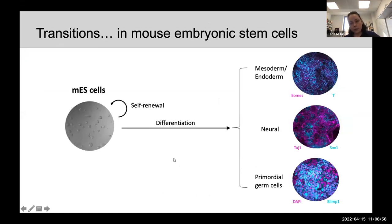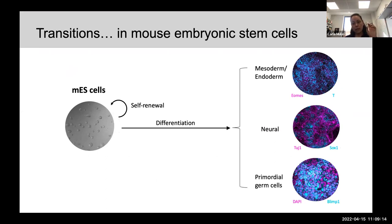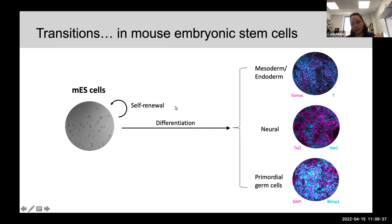I work mostly with mouse embryonic stem cells. You can capture them from the early pre-implantation mouse embryo — just before the embryo implants, there is a group of cells that have the potential to give rise to the adult mouse. We can put the cells in culture, keep them in this state forever, self-renewing — meaning the cells divide without changing properties. We can put the cells back into the embryo and they give rise to chimeras, but importantly we can differentiate the cells further by giving them specific signals, allowing them to form different cell types: muscle precursors, blood, gut, brain, and precursors for sperm and eggs.